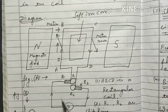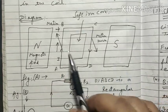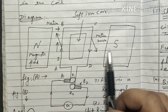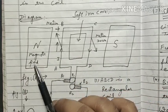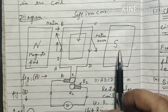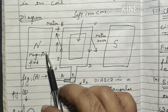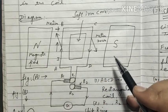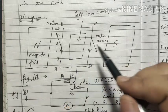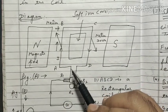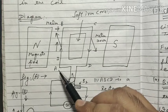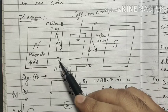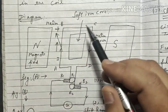First of all, we have a strong magnetic field with the help of two magnet pieces — North Pole and South Pole. The magnetic field moves from North to South. Inside we have a rectangular coil ABCD — a coil made of copper wire with four corners labeled A, B, C, and D.